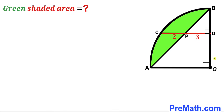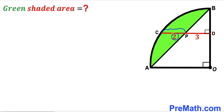Welcome to PreMath. In this video we have a quarter circle with center O along with chord AB, and as a result we get this green shaded region. Moreover, we have a perpendicular CD such that segment CP is 2 units and segment PD is 3 units. Our task is to calculate the area of this green shaded region.